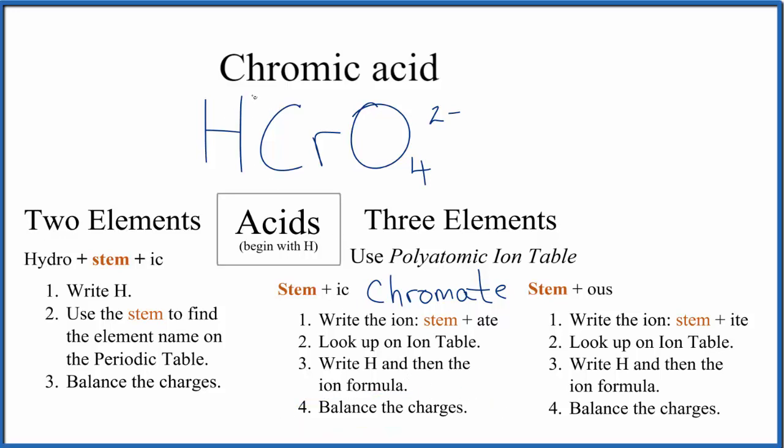This whole thing's 2-. We'll need two of these. Two times 1+ will give us 2+ to balance out the 2-. So this is the formula for chromic acid: H2CrO4.